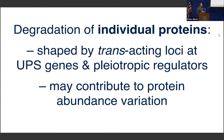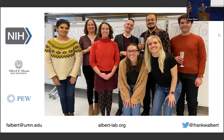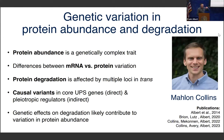So that was my last data slide. This is a summary of our recent unpublished work: the degradation of individual proteins, which really hasn't been looked at in any system through this lens of genetic variation, is shaped by multiple trans-acting loci at both core UPS genes and large pleiotropic regulators, and may play roles in influencing protein abundance variation. I'll stop there — maybe there's time for questions. Sorry, I went long.